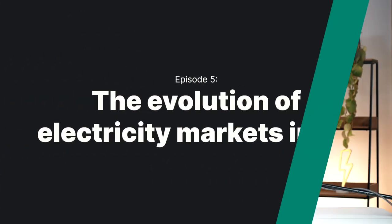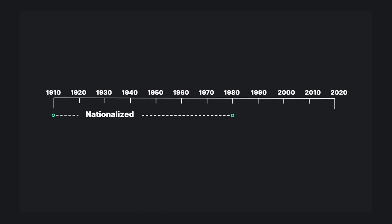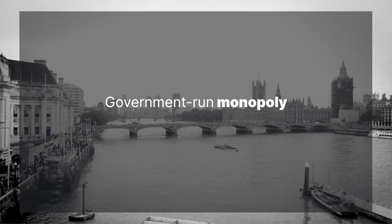Now we've had a look at how the price of electricity is set under current market conditions, it's important to know the context. In Great Britain, our electricity system is privatised. Prior to the mid to late 80s, it was nationalised. You still paid for the electricity you use, but the details were very different. In the past, the electricity system in Great Britain was organised as a government-run monopoly. The Central Electricity Generating Board, or CEGB, was responsible for the generation, transmission, distribution, and supply of electricity to homes around the country.